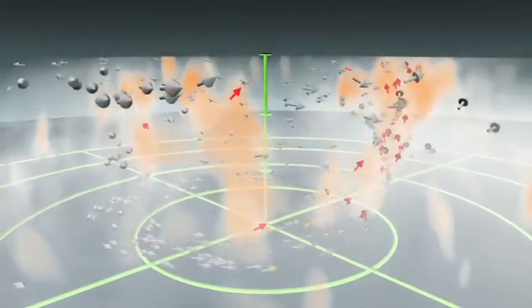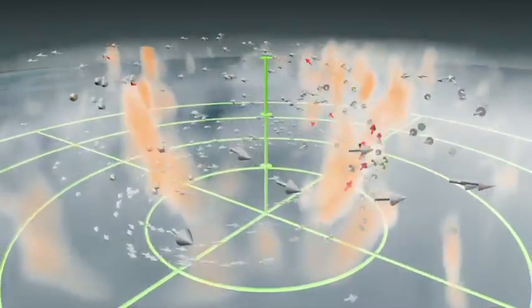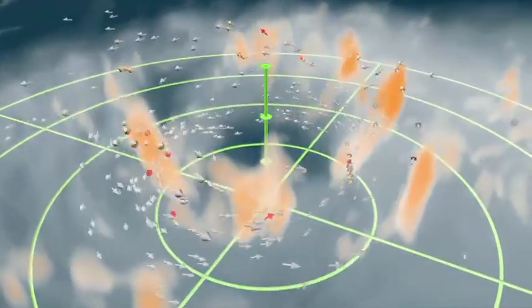But it's more complicated than that, because hot towers move with the hurricane, and there are often multiple updrafts. When air passes into a hot tower, it rapidly rises higher.